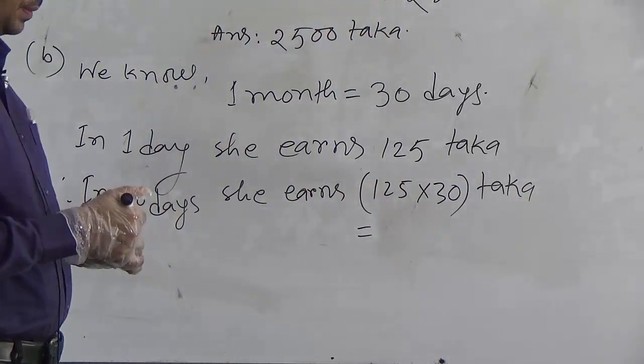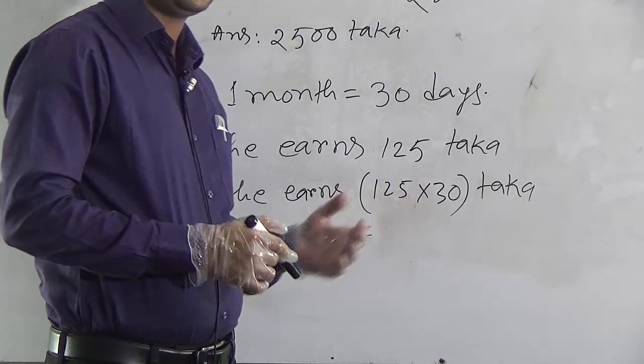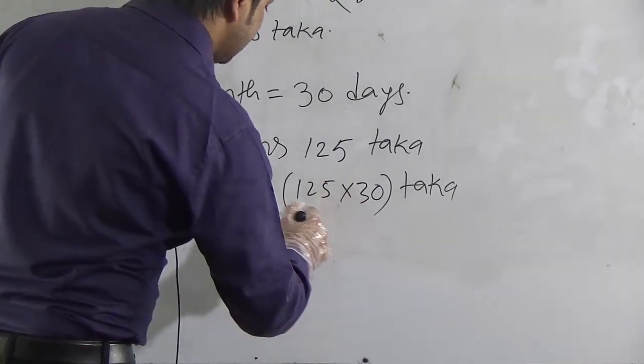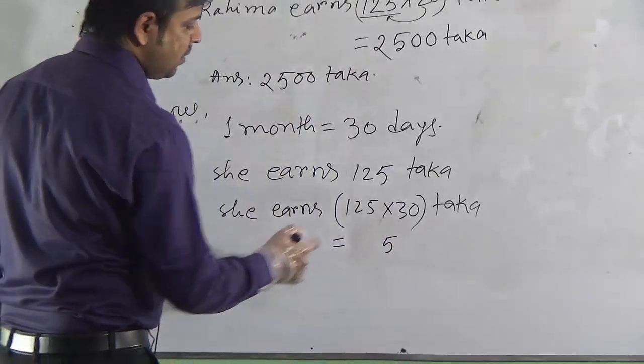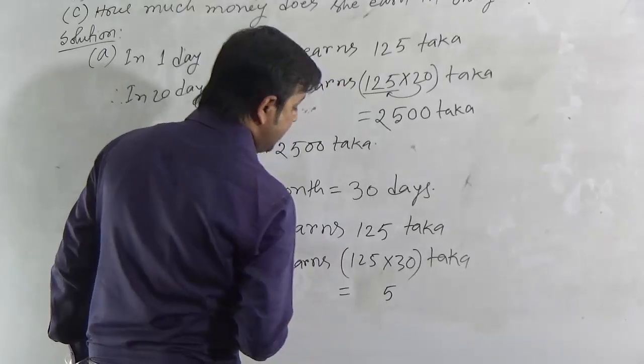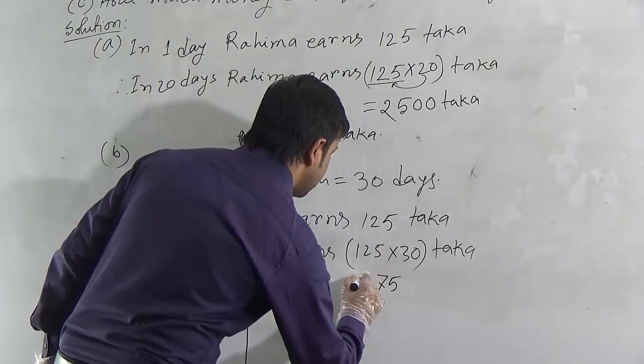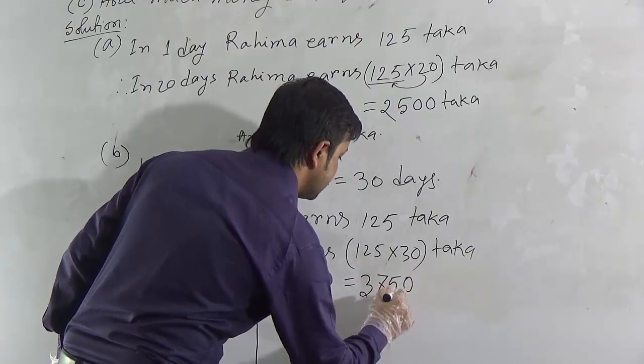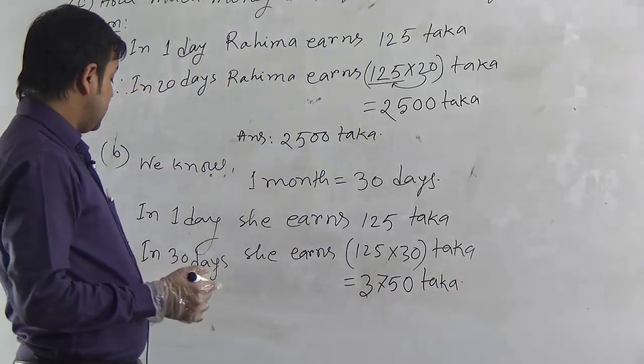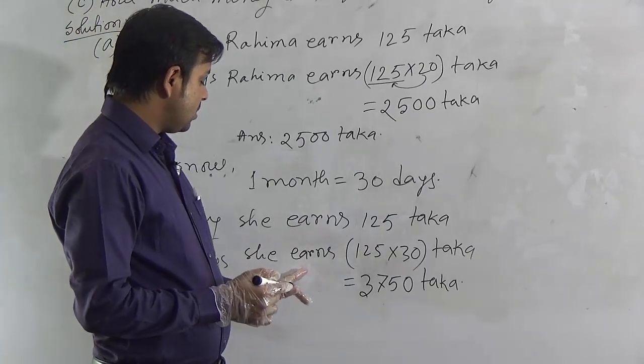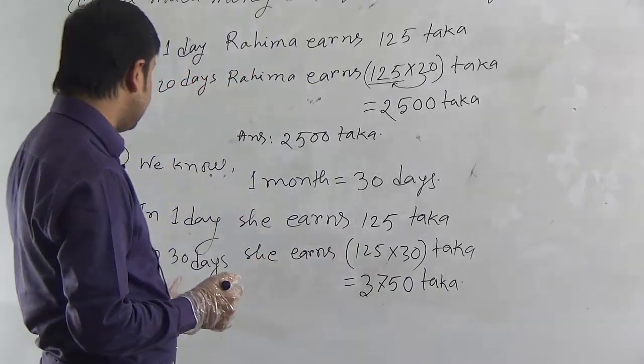This is also a simple multiplication. To do this, if we multiply 125 by 3, then we put a 0, we will get the required answer. We can do this one also easily. 3 fives are 15, 1 left. 3 twos are 6 and 1, 7. Now, 3 ones are 3. Here is a 0, so write a 0 here.